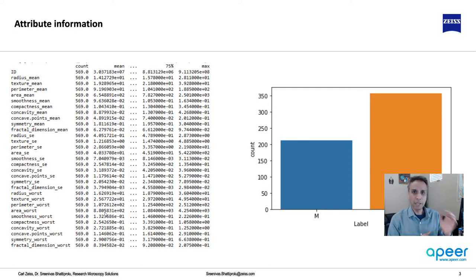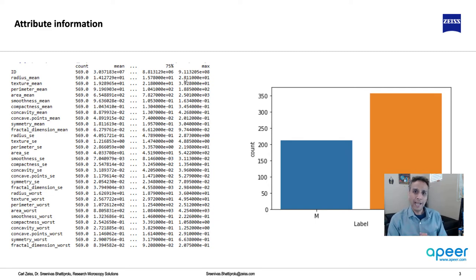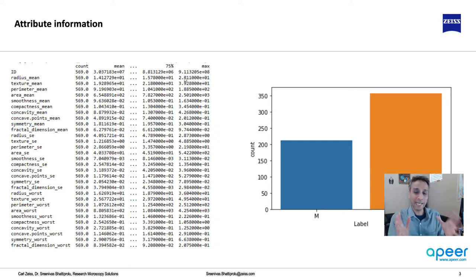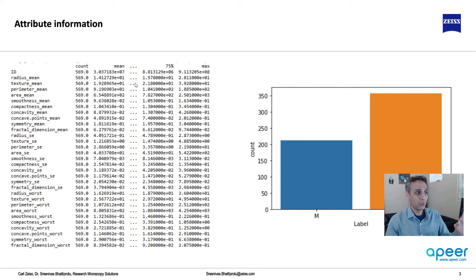One technique is taking the minimum and maximum of each feature — for example, for radius mean, what is the minimum and maximum? — and then processing our data such that the range goes from 0 to 1. The minimum becomes 0, the maximum becomes 1, and everything else fills in between. This is called scaling. We'll talk about this again in one of the upcoming lectures, but right away you can see the need for scaling.